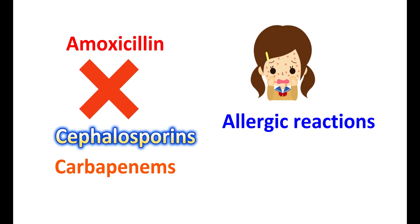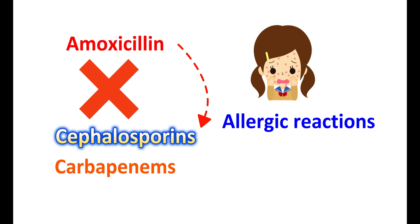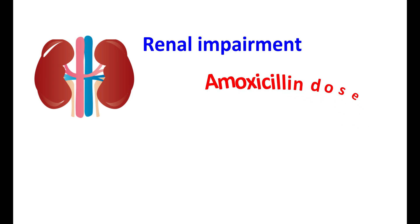Cephalosporins are another category of antibiotics that act like penicillins. Penicillins can show cross-hypersensitivity with cephalosporins — meaning they can induce allergy in people who are already allergic to cephalosporins. So in people who develop allergic reactions with cephalosporins, amoxicillin should be avoided. In people with renal impairment, the amoxicillin dose should be properly adjusted.